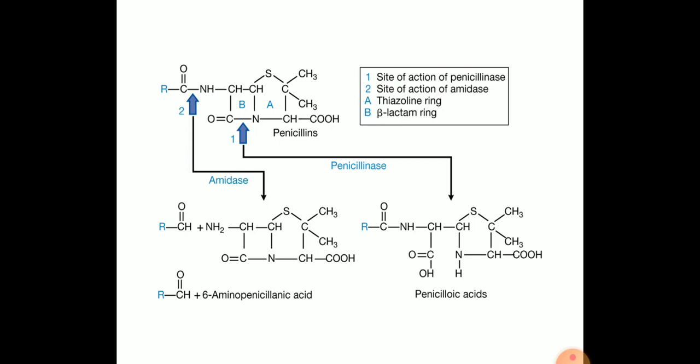The basic structure of penicillin consists of a thiazolidine ring attached or connected to a beta-lactam ring to which a side chain R is attached. The side chain determines many of the antibacterial and pharmacological characteristics of a particular type of penicillin. Penicillin G is the only natural penicillin used clinically. This is also called benzyl penicillin.